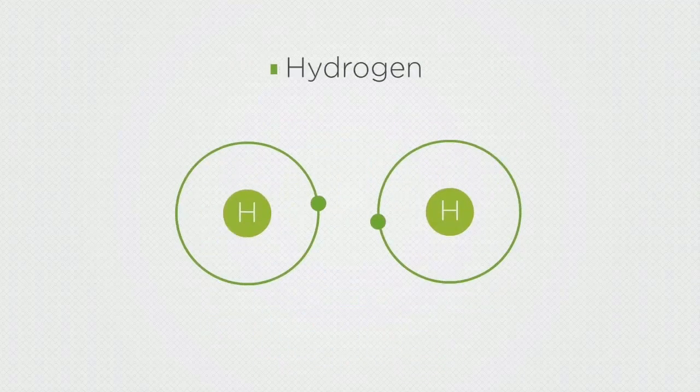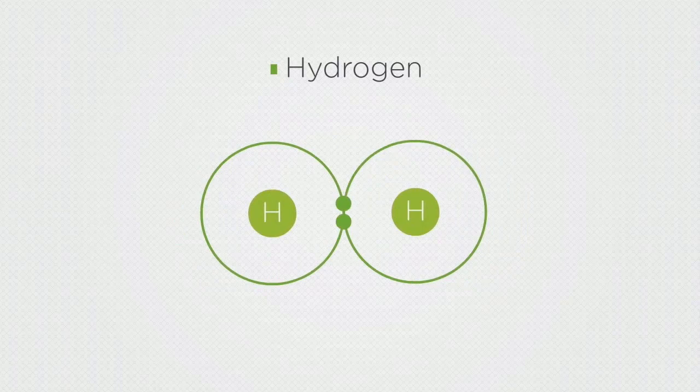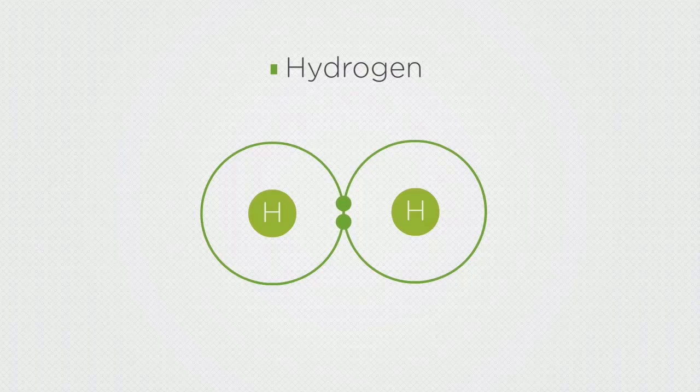When two hydrogen atoms bond, the shells overlap, and because each atom only has one electron to share, there are two electrons being shared over two shells.